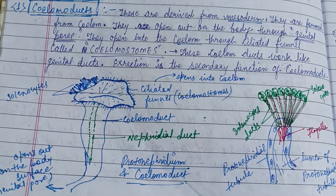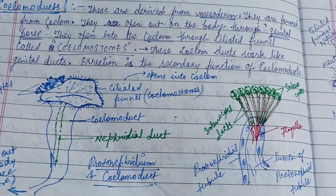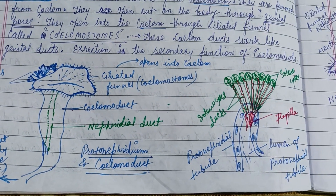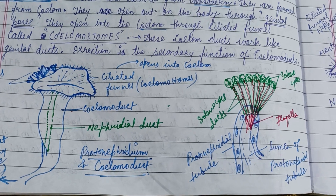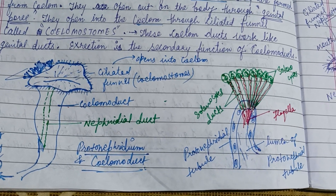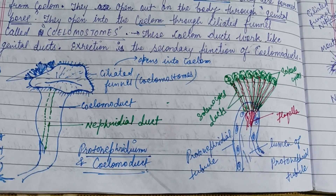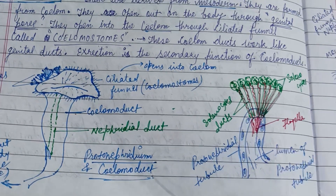There are cilinocytes, and the enlarged view of the cilinocytes includes the cilinocyte ducts, the protonephridial tube, flagella, and the lumen of the protonephridial tubule.